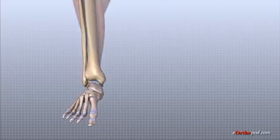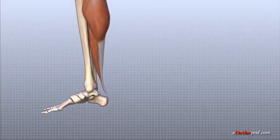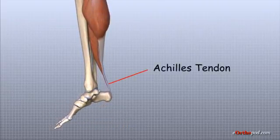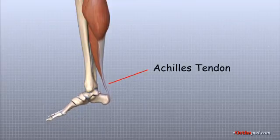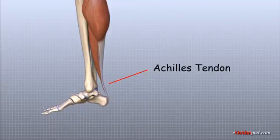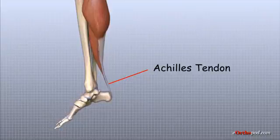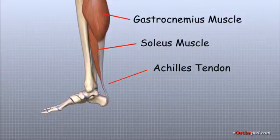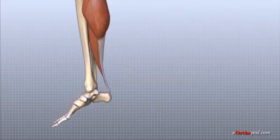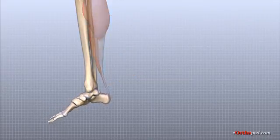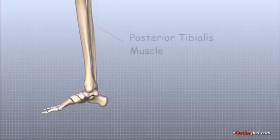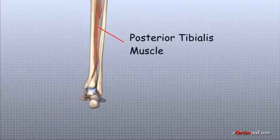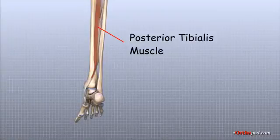Several muscles and tendons are important for ankle joint function. The large Achilles tendon is the most important tendon for walking, running, and jumping. It attaches the two calf muscles, the gastrocnemius and the soleus, to the calcaneus and allows us to raise up on our toes. The posterior tibial tendon attaches the posterior tibialis muscle in the calf to the underside of the foot, helping support the arch and allowing us to turn the foot inward.